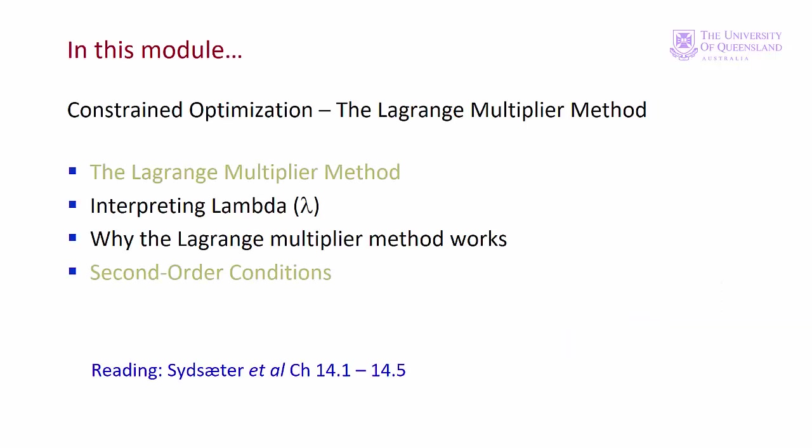In Module 1 of this lecture we saw how to find the optimal values for a constrained optimisation problem. In this module we'll see that lambda is not just a meaningless constant — it has a useful interpretation. We'll also work through an intuitive explanation, that is not a formal proof, of why the Lagrange multiplier method works.